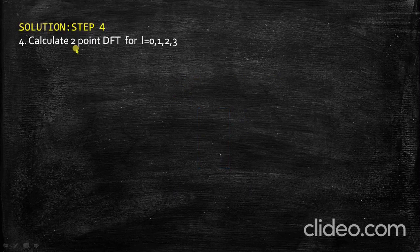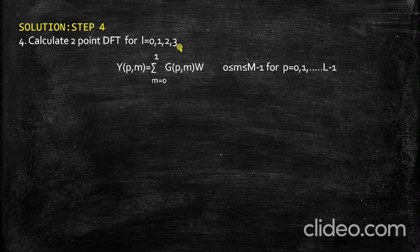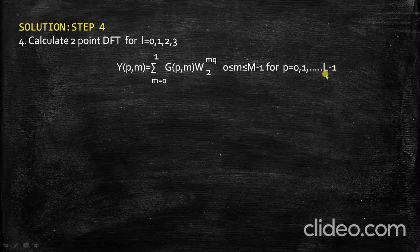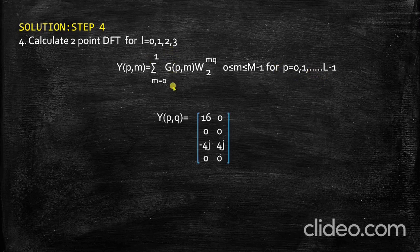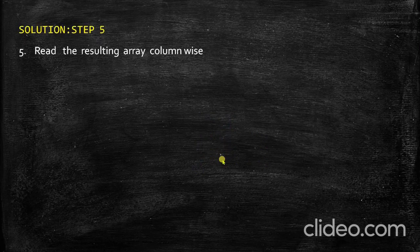The next step is to compute the 2-point DFT for each row, with L=0, 1, 2, 3. The equation for the 2-point DFT is the standard DFT sum where M takes values from 0 to M minus 1. Since capital M=2, M takes values 0 and 1, and P takes values 0 to L minus 1 — so 0, 1, 2, 3 since L=4. Once computed, the resulting transformation signal matrix in two-dimensional form is obtained: 16, 0, 0, 0, -4j, 4j, 0, 0. The last step is to read this matrix column-wise.